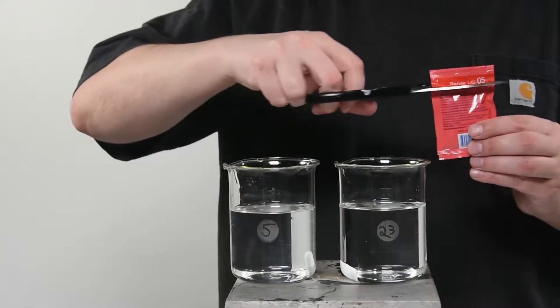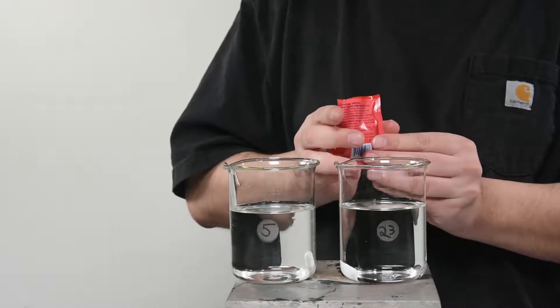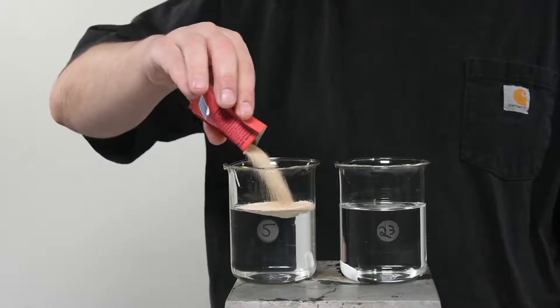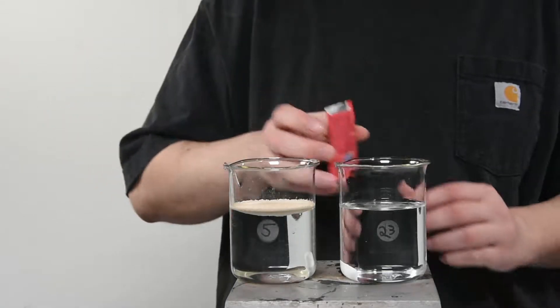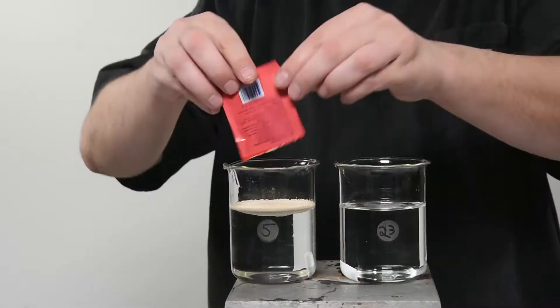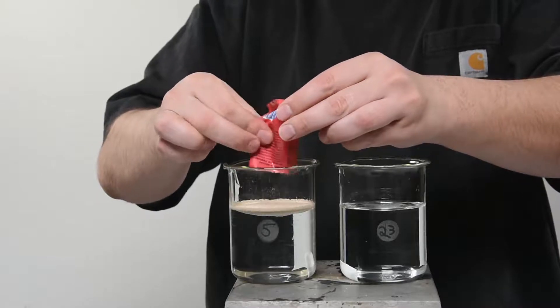We will start with the most common, the Saff Ale US05, an American Top Fermenting Ale Yeast Strain. This clean fermenting yeast is most comparable to WLP 001 and Wyeast 1052.